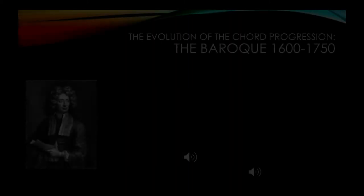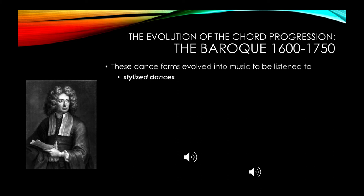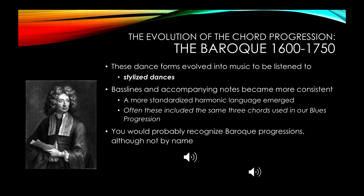As we move forward into the Baroque era — about 1600 to 1750 — this dance music got so popular that basically they stopped dancing to it and just sat down and listened. When we have dance forms composed just to be listened to, those are called stylized dances. The bass lines used for these dances and the accompanying notes became much more consistent, giving us a more standardized harmonic language — chords leading one into the next. Often these included the same three chords we heard in the blues progression. You'd probably recognize some Baroque chord progressions, but not by name. There were a ton of them with strange names like Passacaglia, Chaconne, Folia, Passamezzo, and Romanesca.